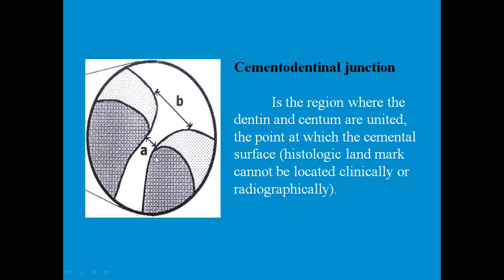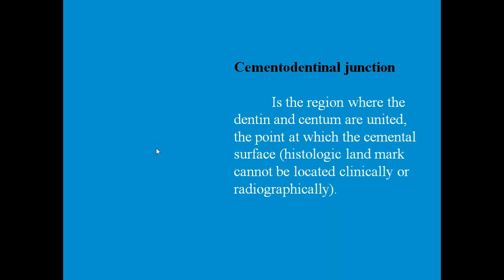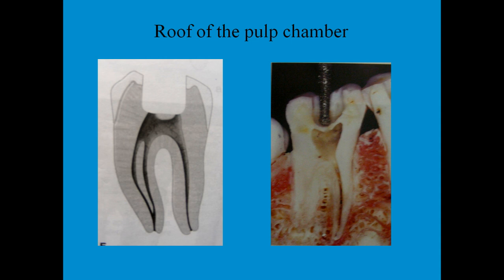Another terminology to remember is the cemento-dentinal junction (CDJ), which is the junction between the dentine and the cementum of the tooth. This is a histological landmark and cannot be located clinically or radiographically. Sometimes it may coincide with the minor diameter.